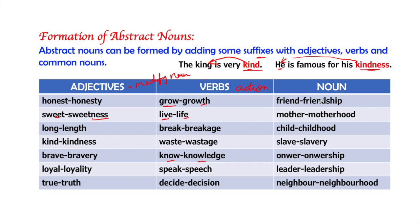Abstract nouns can be formed through common nouns too, like friend is a common noun but friendship will be abstract noun. Mother will become motherhood, child childhood, slave slavery. Owner ownership, like 'he is an owner,' it's a common noun. 'The firm is running under his ownership.' Leader, leadership. Neighbor and neighborhood. So in this way we can form abstract nouns out of adjectives, verbs, and nouns.